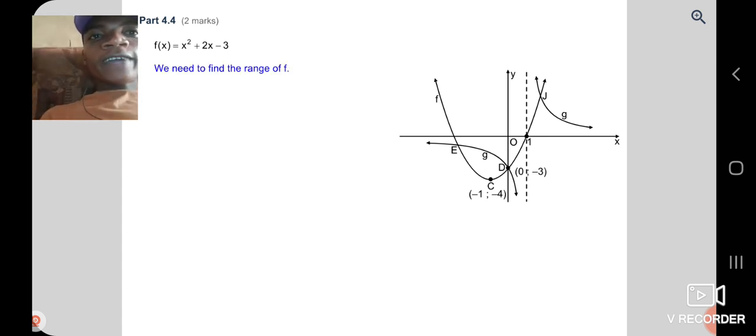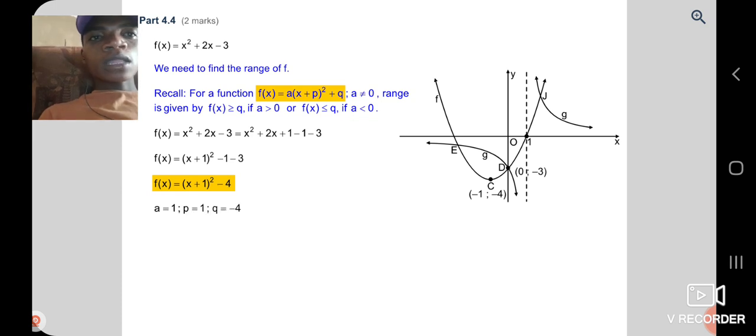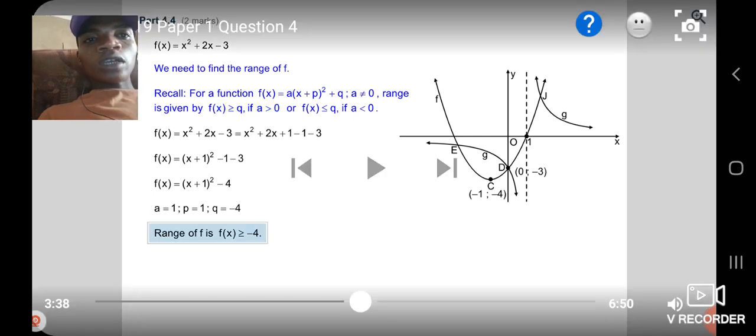Question 4.4. We need to find the range. When you need to find the range, range is a turning point. We take turning point of a parabola. So range is f(x) greater than -4. I will show you on our question how the answer is coming from.